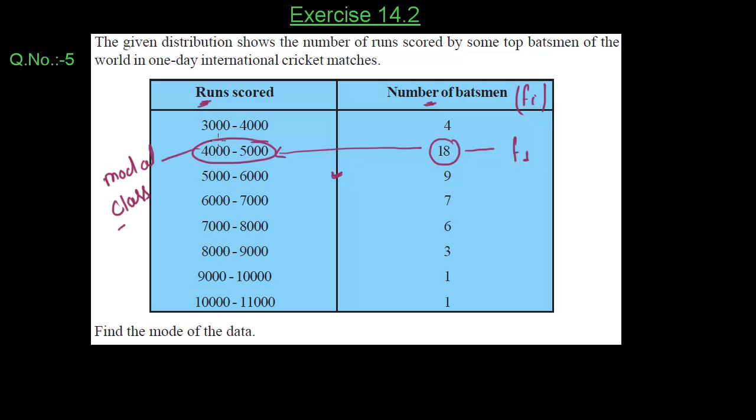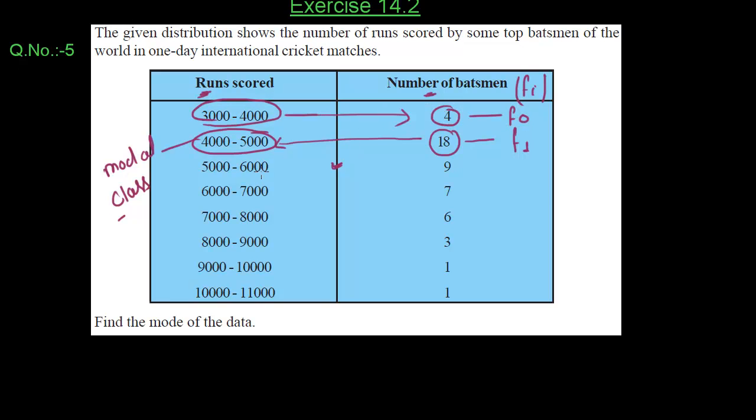We know that the frequency of that class interval which comes just before the modal class interval is our F0. We can see in this table that class interval 3000 to 4000 just comes before the modal class interval. So 4 is our F0.